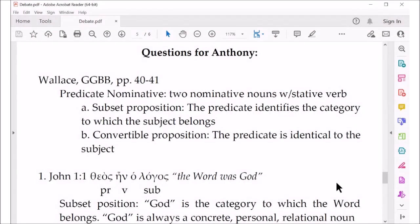I'm referring to Wallace, Daniel Wallace, Greek Grammar Beyond the Basics, pages 40 through 41, where he defines the predicate nominative as two nominative nouns with stative verbs. And he gives two possible ways that predicate nominative constructions can be interpreted.